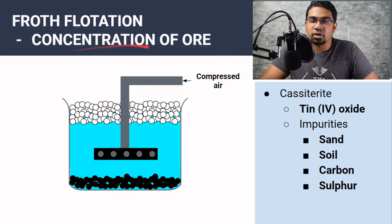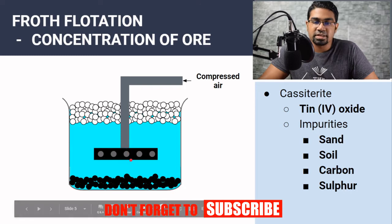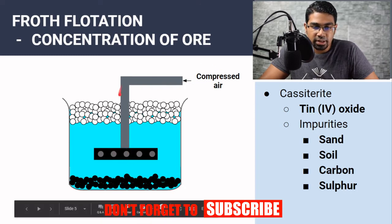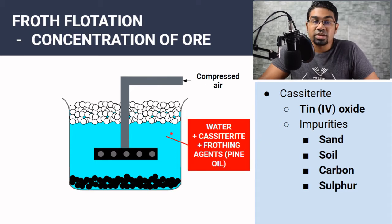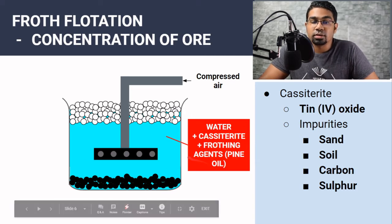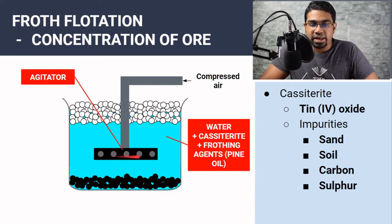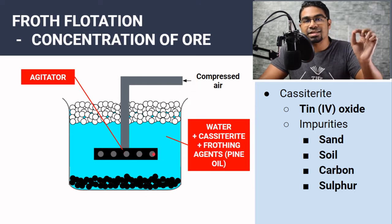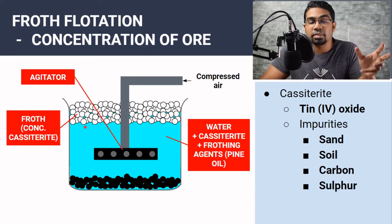The purpose of froth flotation is to concentrate the ore. This device in the middle is called an agitator. Compressed air is fed inside and released through outlets. The ore is crushed and put into water together with frothing agents such as pine oil, which helps the froth and bubbles to form at the top. The compressed air let out through the outlets creates the bubbles, and this is the froth where the concentrated cassiterite will be.